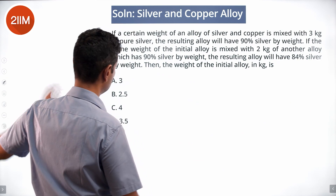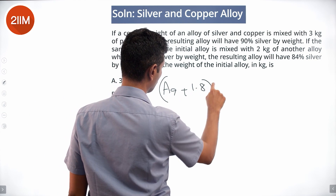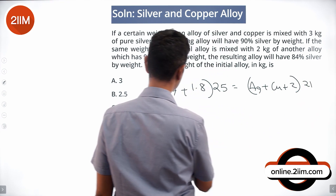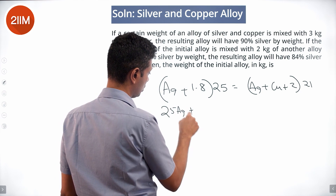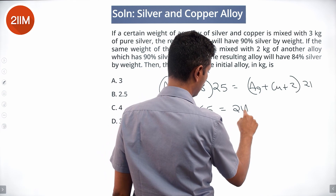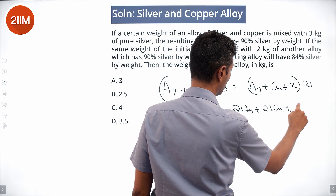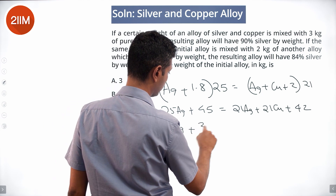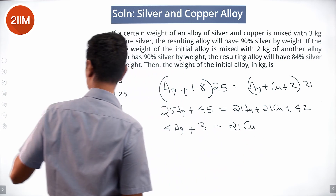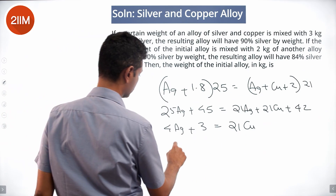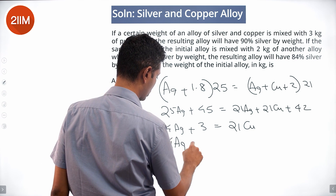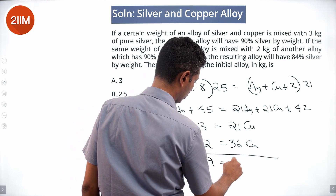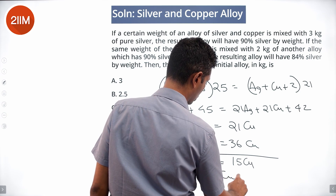From the second equation: Ag + 1.8 into 25 = (Ag + Cu + 2) into 21, giving 25·Ag + 45 = 21·Ag + 21·Cu + 42, so 4·Ag + 3 = 21·Cu. Combined with Ag + 3 = 9·Cu, we multiply: 4·Ag + 12 = 36·Cu. Subtracting: 9·Cu = 15·Cu... solving gives Cu = 3/5.